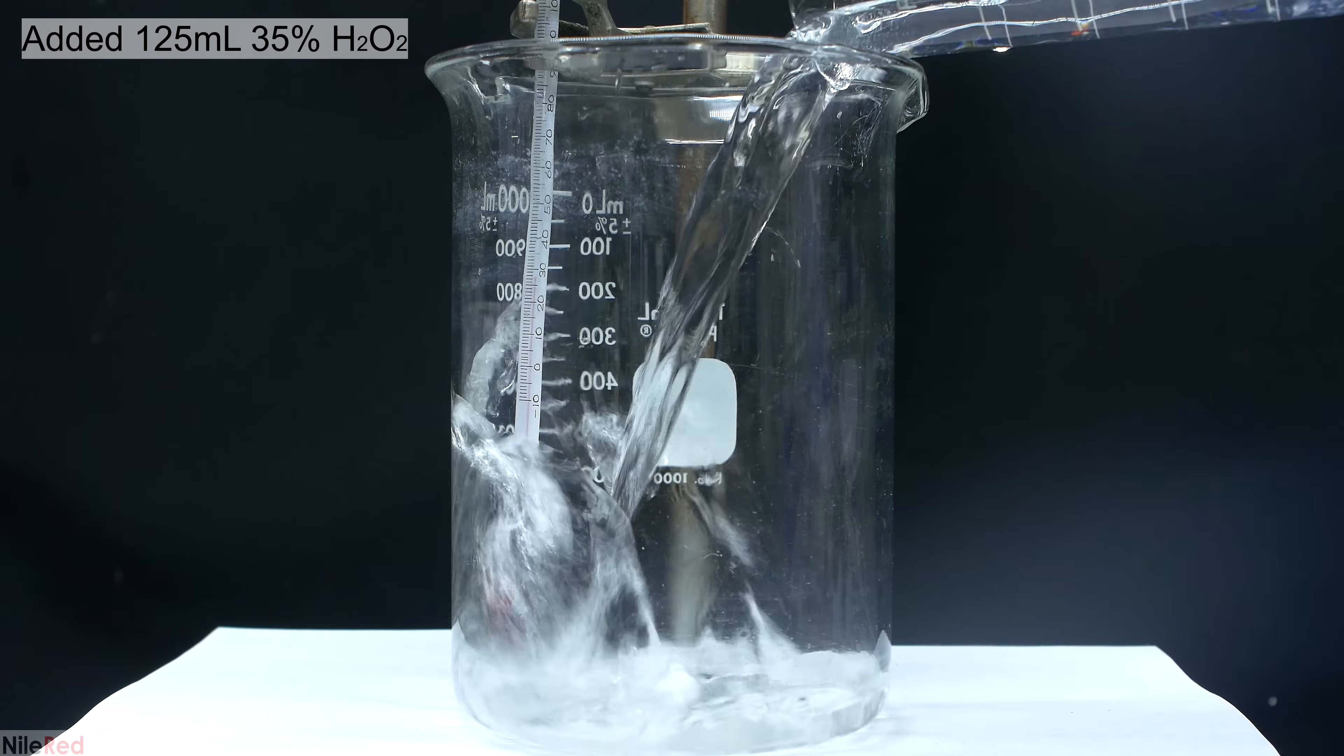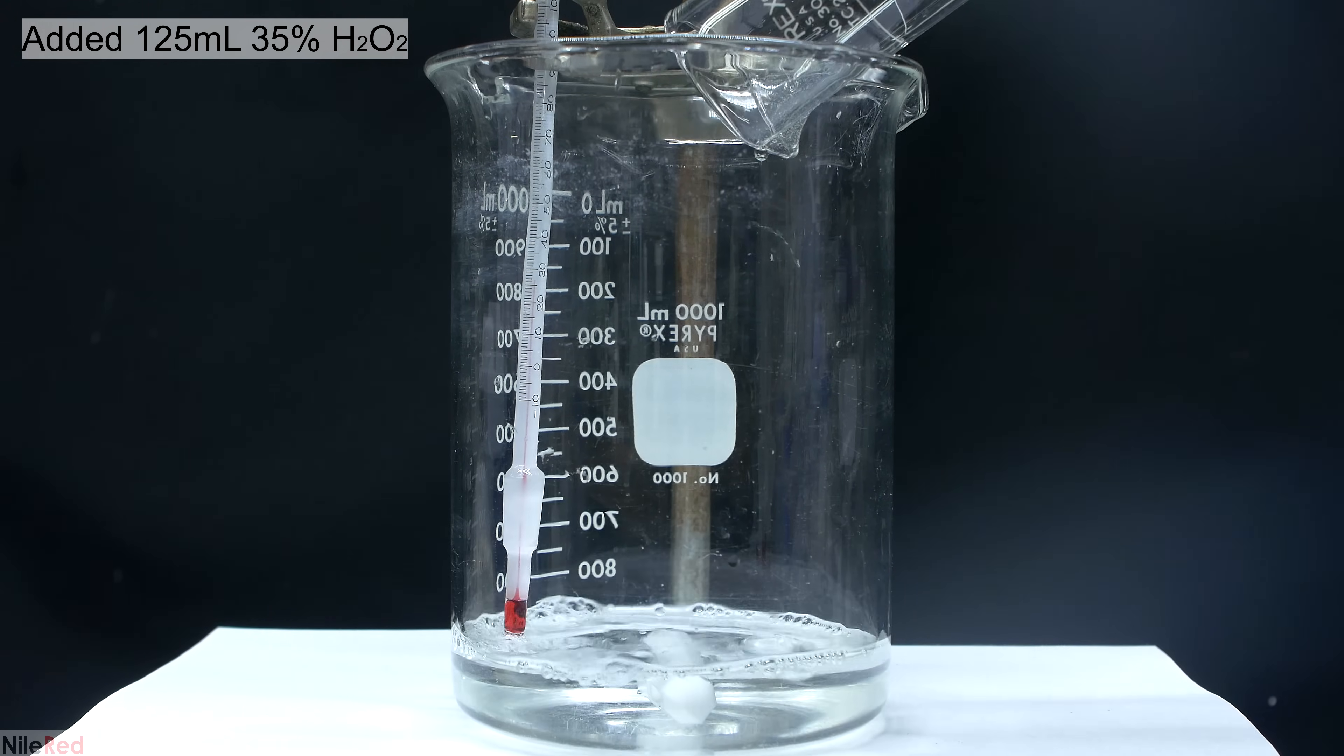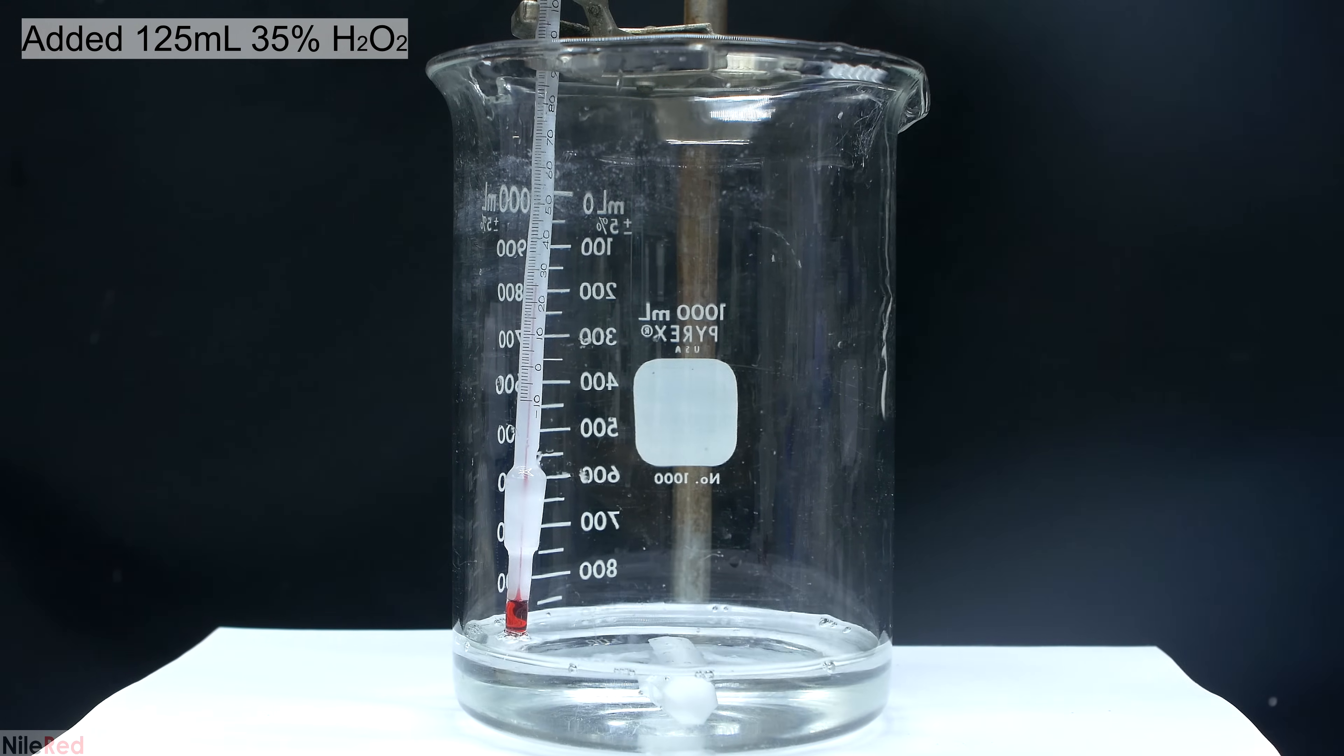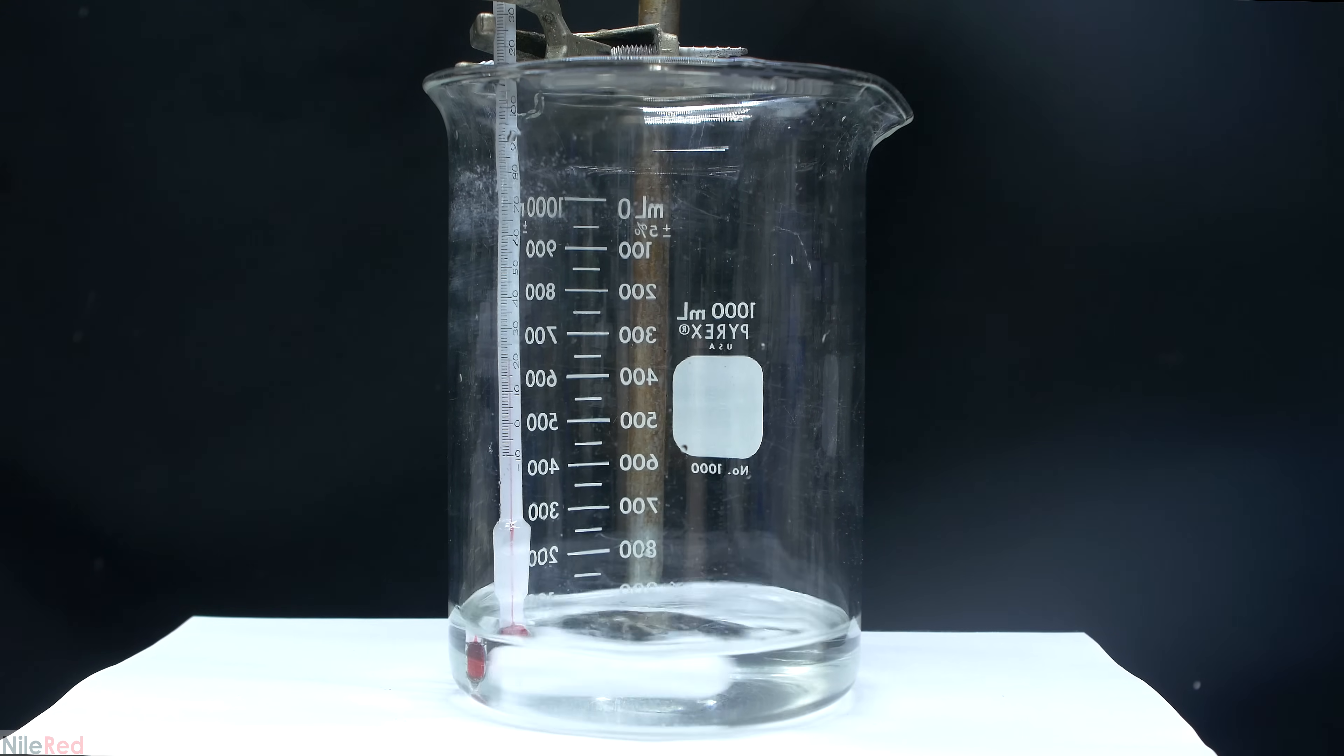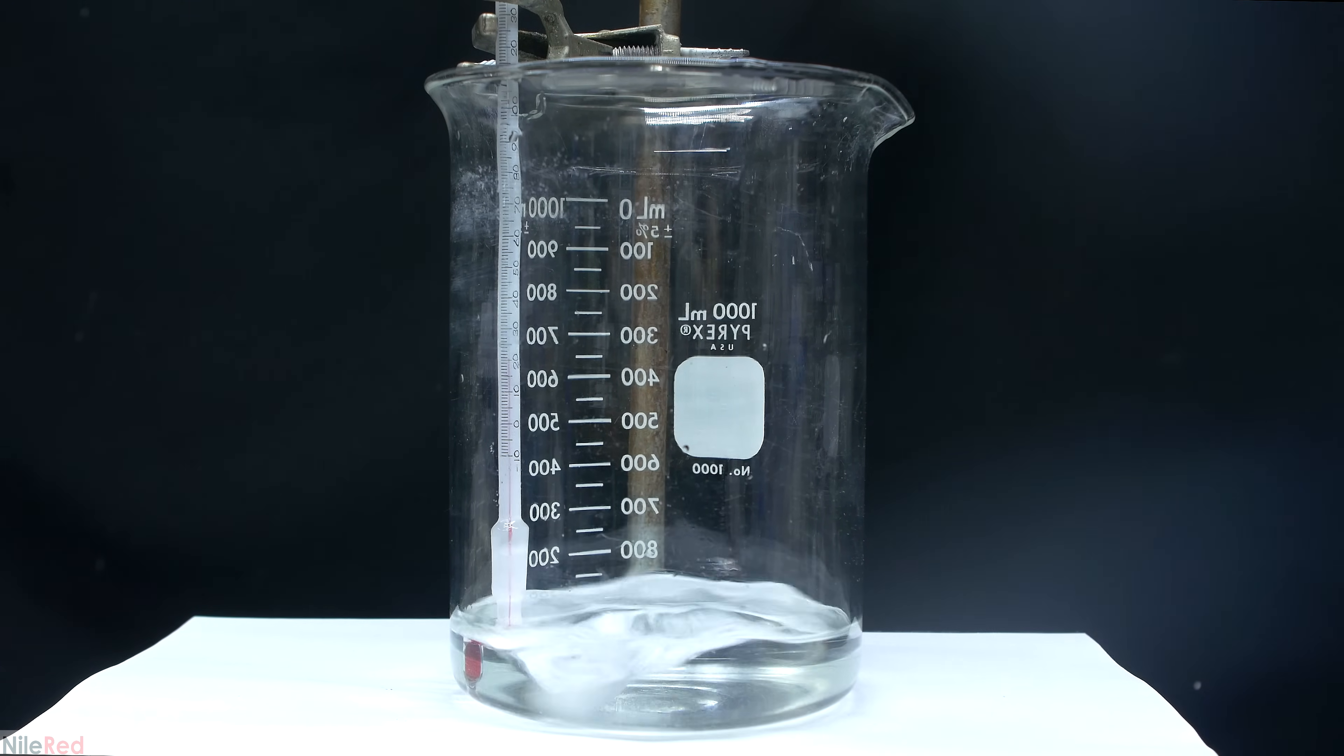To start things off, I added 125 milliliters of 35% peroxide to a beaker. The next thing that we need to do is add about 50 grams of lithium hydroxide. I turn on my stir plate and with vigorous stirring, we can start to add the lithium hydroxide.